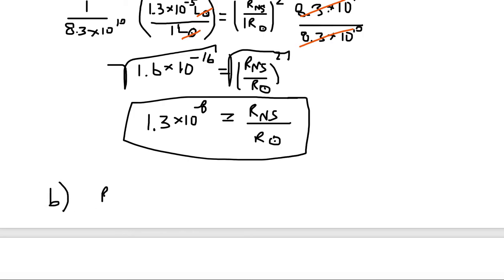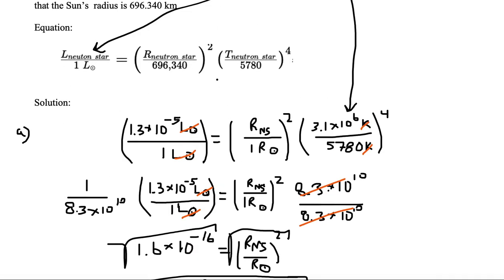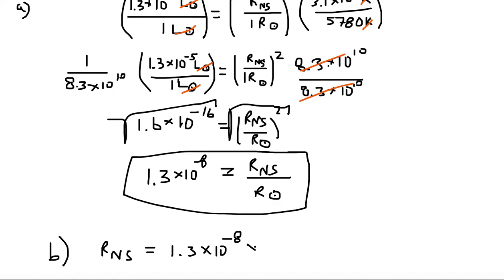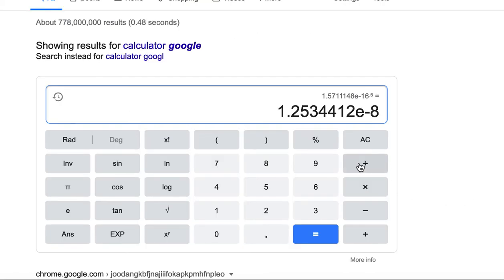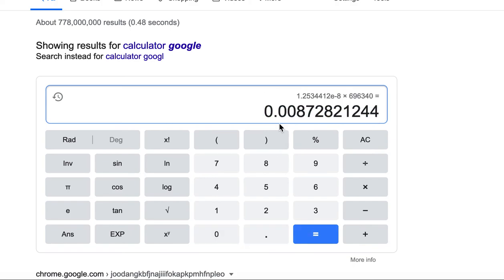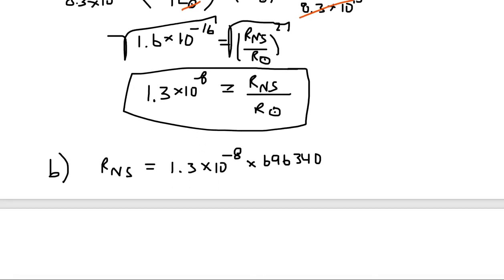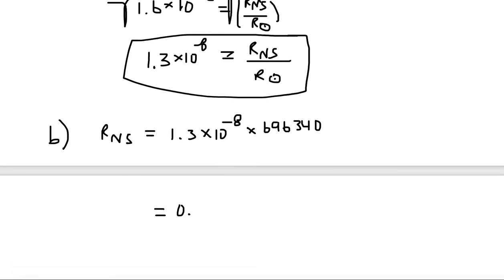For part B, we want to find the actual radius of the neutron star. We multiply both sides by the radius of the sun: 1.3 times 10 to the minus 8, multiplied by 696,340 kilometers. This gives us a value of about 0.009 kilometers, which is a very small size.